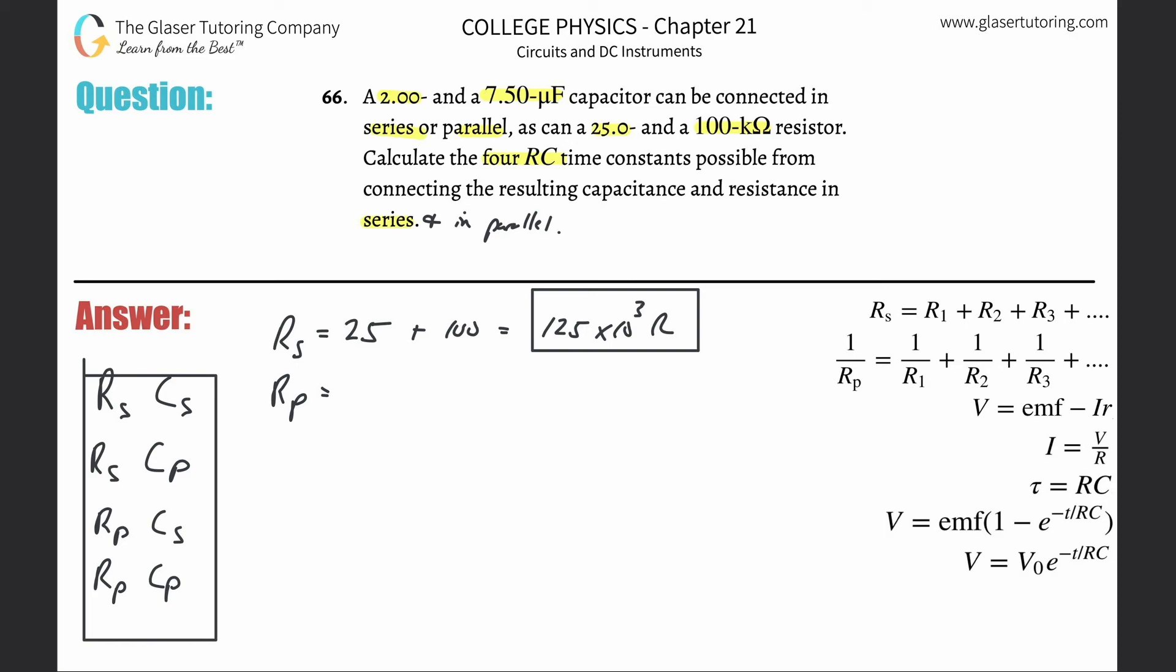The resistance in parallel is a little more complicated. 1 over RP is 1 over 25 kilo ohms plus 1 over 100 kilo ohms. I'm going to do the calculation in kilo ohms and convert at the end. So 1 over RP equals 1 over 25 plus 1 over 100, which is 0.05. So RP is 1 over 0.05, which works out to 20 kilo ohms. We need that in ohms, so multiply by 10 to the 3rd ohms.